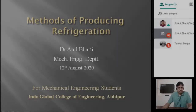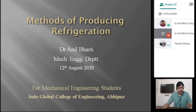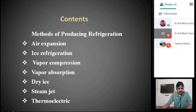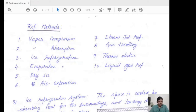Today we will discuss methods of producing refrigeration. We will cover various types of refrigeration methods: air expansion refrigeration system, ice refrigeration system, vapor compression refrigeration system, vapor absorption system, dry ice, steam jet, and thermoelectric refrigeration system. We will start with the ice refrigeration system first.